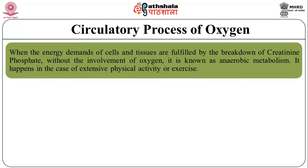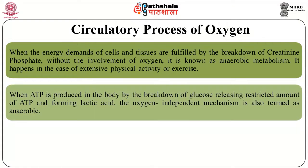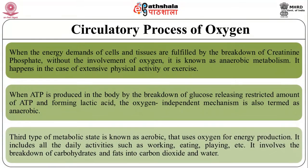Anaerobic metabolism happens in the case of extensive physical activity or exercise where the muscle cells and tissues are utilized to the maximum. Similarly, when ATP is produced by the breakdown of glucose releasing a restricted amount of ATP and forming lactic acid, this oxygen-independent mechanism is also termed anaerobic. The third type of metabolic state is known as aerobic, which uses oxygen for energy production. It includes all daily activities such as working, eating, playing, etc., and involves the breakdown of carbohydrates and fats into carbon dioxide and water.